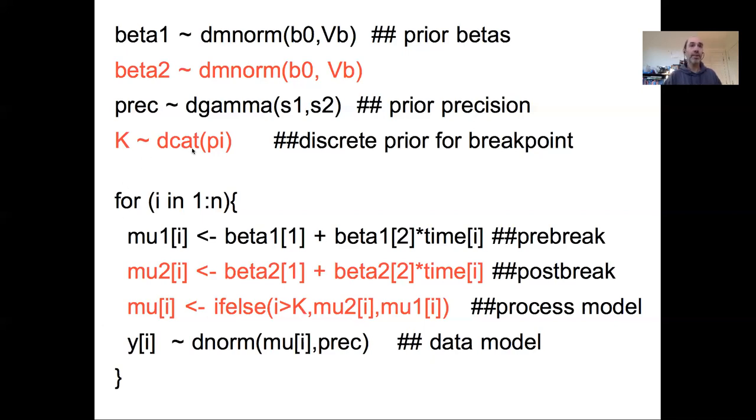In this case we're going to use a categorical prior and assign vector probabilities for the different options for when that change point occurs, and typically that might just be equal probability to all of the different points in time. So if this has n points, this pi each might be 1 over n as a vector. That said, the categorical prior does allow different probabilities. We haven't seen this prior before, but it basically allows us to model discrete states occurring with discrete probabilities.